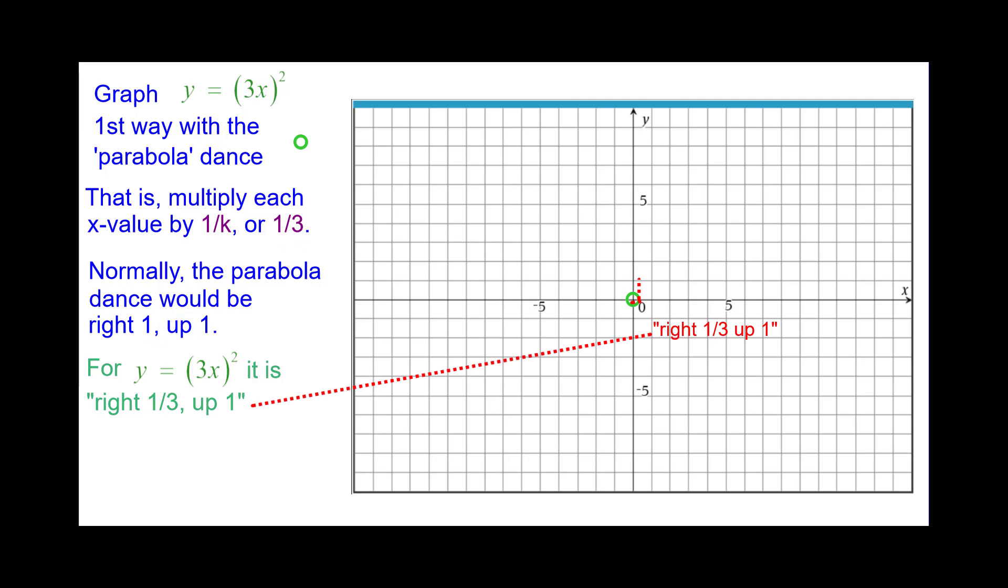Y values stay the same. So we will plot that point, right 1 third up 1. The next point would be right 2 up 4, but for this one it would be right 2 thirds up 4 because 1 third times 2 is 2 thirds. Y coordinate stays the same.